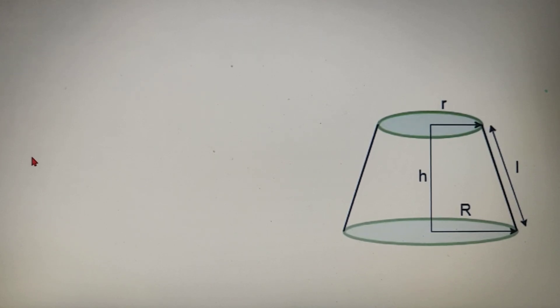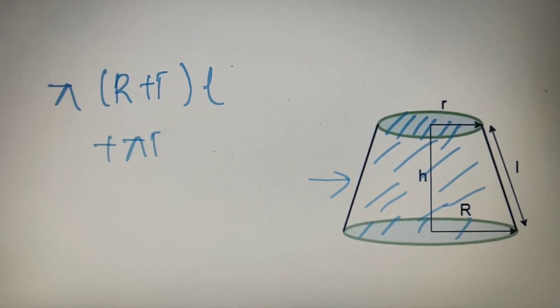Now moving on to the total surface area. Now total surface area of any figure is equal to the curved surface area of the figure and the area that is left over. So over here the curved surface area of this frustum is equal to pi times R plus small r into L and the leftover area is nothing but the area of the top and the area of the bottom. So that is equal to pi times small r square plus pi times capital R square.